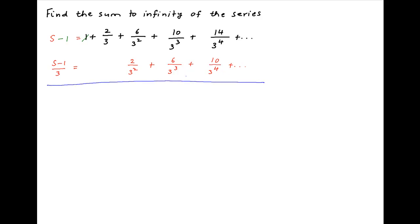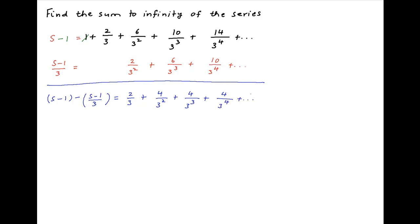Subtract the second series from the first series. On the left hand side we get S minus 1 minus (S minus 1)/3, and on the right hand side we get 2/3 plus (6 minus 2)/3² which is 4/3². The next term is 4/3³, and the following term is 4/3⁴ plus and so on.